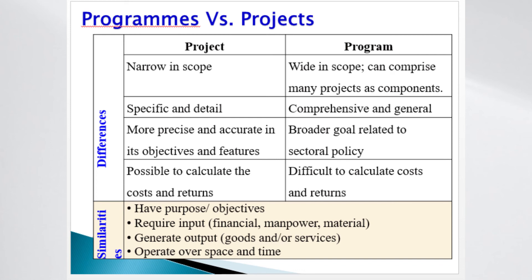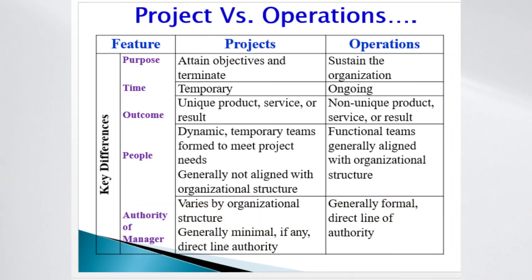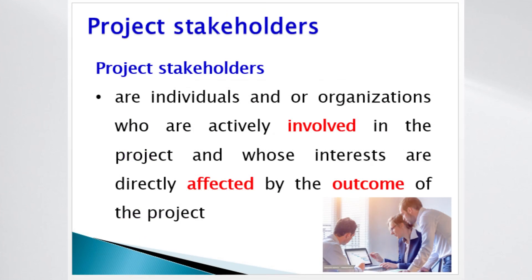Let us see the difference between project and operation. Organizations perform two types of work: project work and operational work. The purpose of a project is to attain objectives and terminate, but the objective of operations is to sustain the organization. The lifetime of projects is temporary, but the time of operations is ongoing. Projects produce unique products, services, or results, while the output of operations is non-unique. Projects have dynamic and temporary teams, but operations have functional and permanent teams. The authority of projects varies by organizational structure, but operations have a direct and formal line of authority.